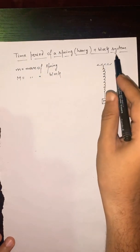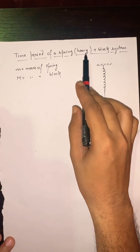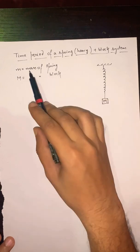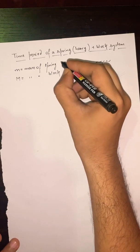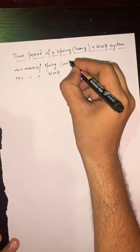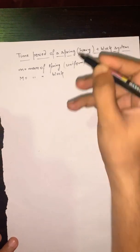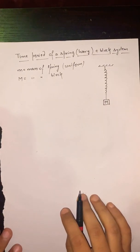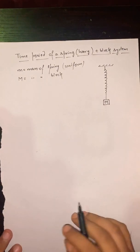Here the spring is heavy and the mass of the spring is small m. The spring is uniform, meaning the mass is uniformly distributed so the variation will be linear.